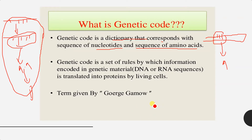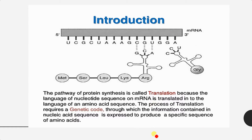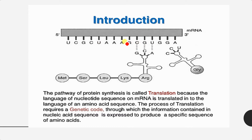The term genetic code was given by George Gamow. The pathway of protein synthesis is called translation because the language of the nucleotide sequence of mRNA is translated into the language of an amino acid sequence. The process of translation requires the genetic code, through which information in the nucleic acid sequence is expressed to produce a specific sequence of amino acids. The mRNA consists of nucleotide codons collectively known as genetic codes or triplet codons, from where translation is initiated by means of tRNA.